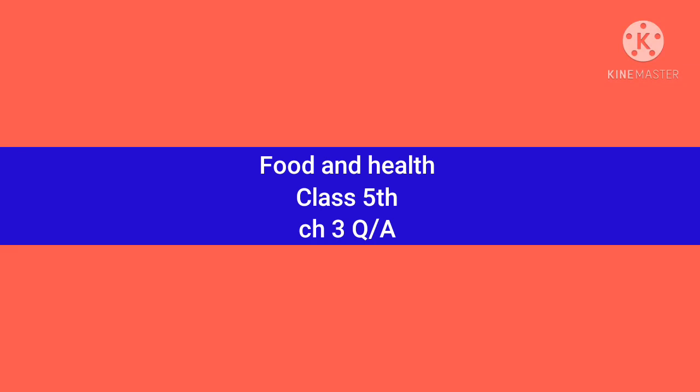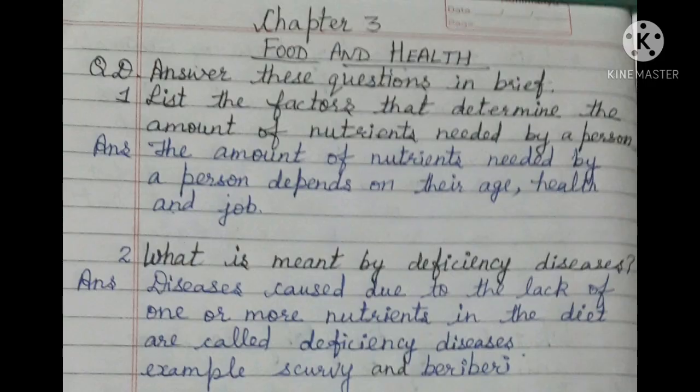Food and Health, Chapter 3, Class 5th Question Answer. Answer these questions in brief. Question 1: List the factors that determine the amount of nutrients needed by a person.